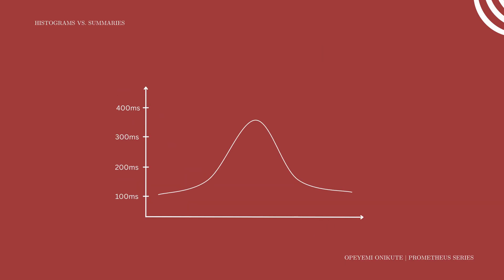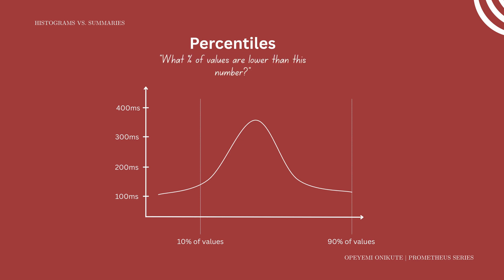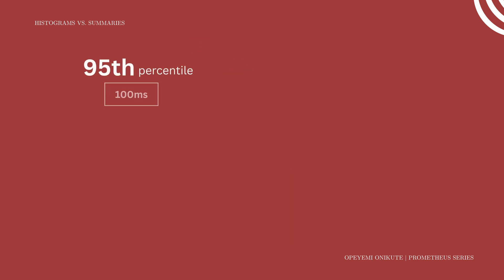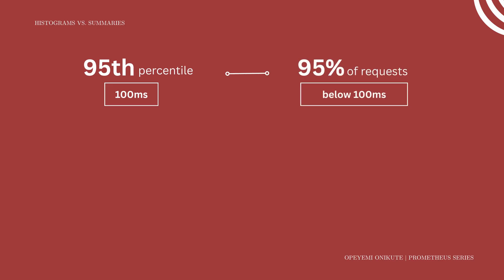To understand the typical user experience, we need to look at the distribution of values, not just the average. This is where percentiles come in. A percentile tells you how a value relates to the rest of the group — it answers the question: what percentage of values are lower than this number? If you say your 95th percentile is 100 milliseconds, this means that 95% of your requests are less than 100 milliseconds.